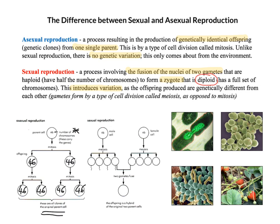Comparing that with sexual reproduction: we start with the male cell (sperm) and the female cell (egg), both with 46 chromosomes. But after meiosis - the cell division producing the gametes of sperm and egg - we get cells with 23 chromosomes. These are haploid cells with half the original number. When one sperm meets one egg and the nuclei fuse together, we get a diploid cell with 46 chromosomes. The offspring is a hybrid of the original two parent cells.